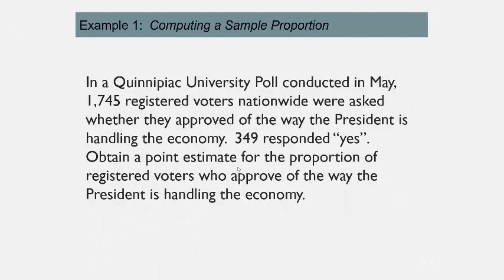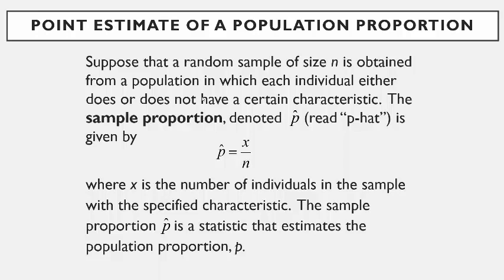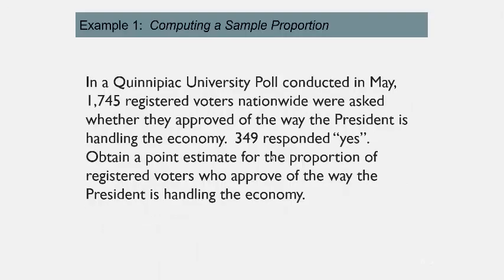For example, in a Quinnipiac University poll conducted in May, 1745 registered voters nationwide were asked whether they approved of the way the president is handling the economy. The answer is yes or no — you either do have the characteristic or you do not. 349 responded yes. So to obtain a point estimate for the proportion who approve, we calculate p-hat: 349 divided by 1745, which gives 0.20.